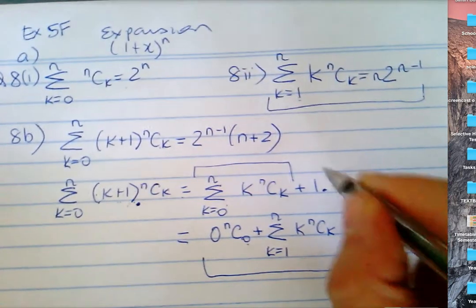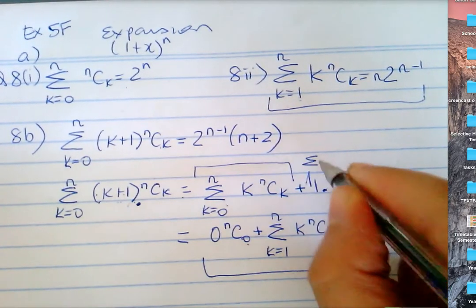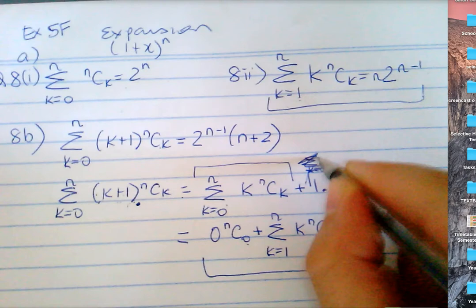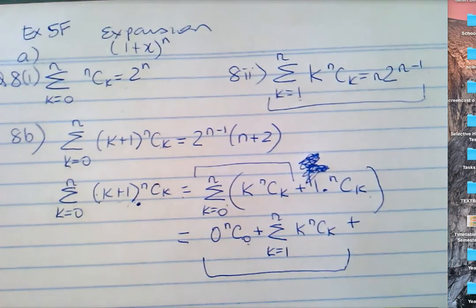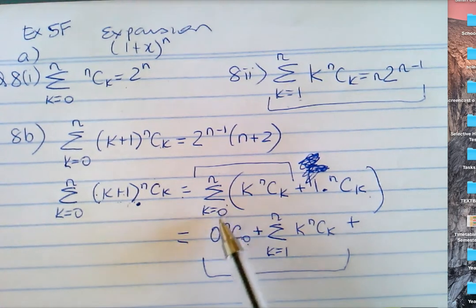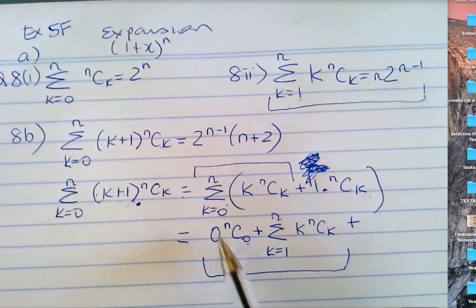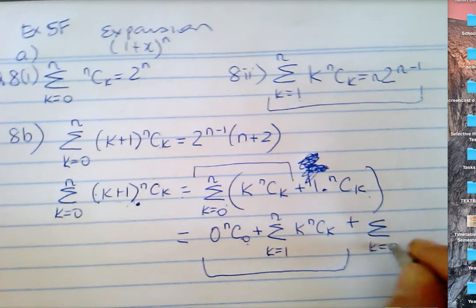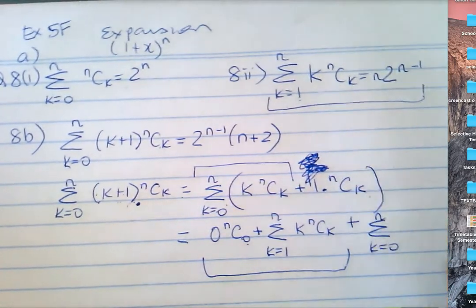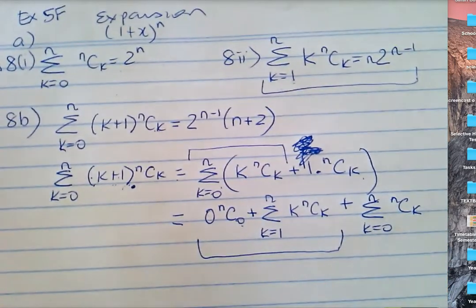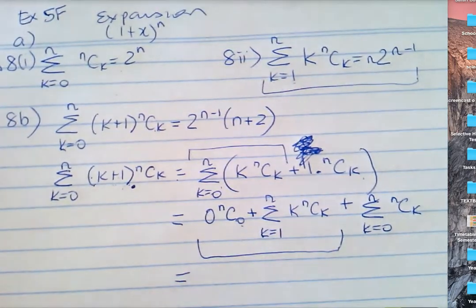I should have a sum symbol in front, and put a bracket. So therefore it is: I do the zero term and then from k is one to n, plus the sum from k is zero to n of one times nCk. Now substitute your results from part a.